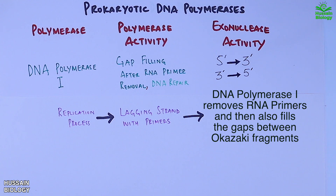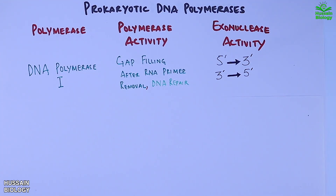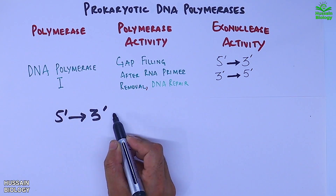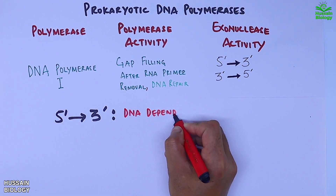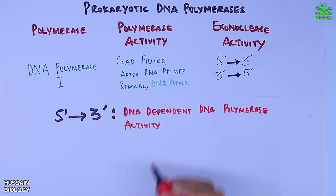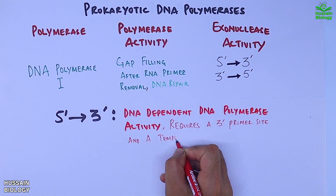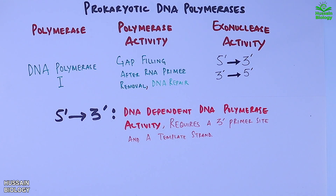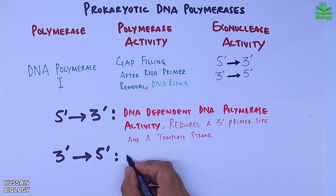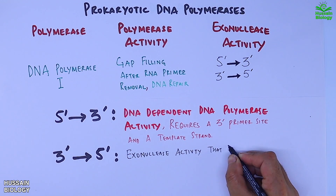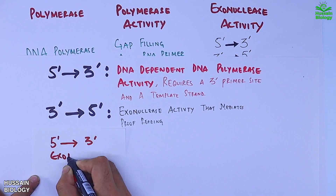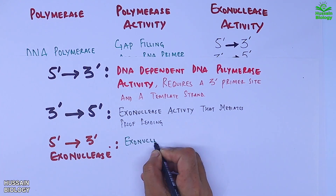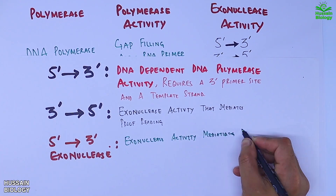Looking further at the exonuclease activity of DNA polymerase 1: the 5' to 3' activity is its primary DNA-dependent DNA polymerase activity, which requires a 3' site and a template strand. There is also 3' to 5' exonuclease activity that mediates proofreading. And finally, 5' to 3' exonuclease activity that mediates nick translation during DNA repair.